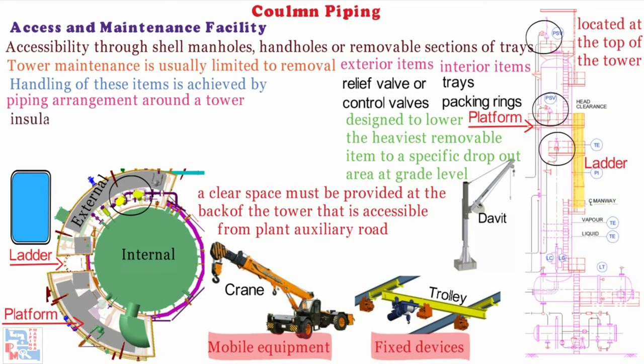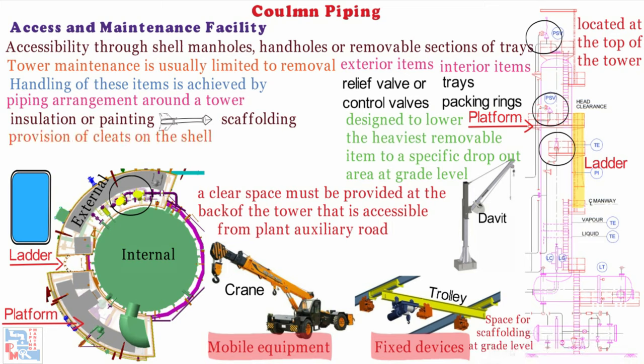Access for major maintenance to insulation or painting will usually require the erection of temporary scaffolding. Space for scaffolding at grade level and provision of clips on the shell to facilitate scaffold erection should be considered. Utility sections of two services which steam and air are usually provided on maintenance platforms. Steam and air risers should be located during piping study to keep adequate clips for support.